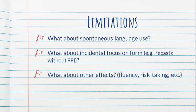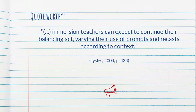Something else all studies should consider is other effects — for example, fluency or learners' willingness to take risks with a language. In many SLA studies, it seems like the only thing the teacher cares about is accuracy, but at what cost? I like this quote from the article: instead of concluding that one type of feedback was superior, the author says, 'immersion teachers can expect to continue their balancing act, varying their use of prompts and recasts according to context.' I would say not just immersion teachers, but all language teachers.